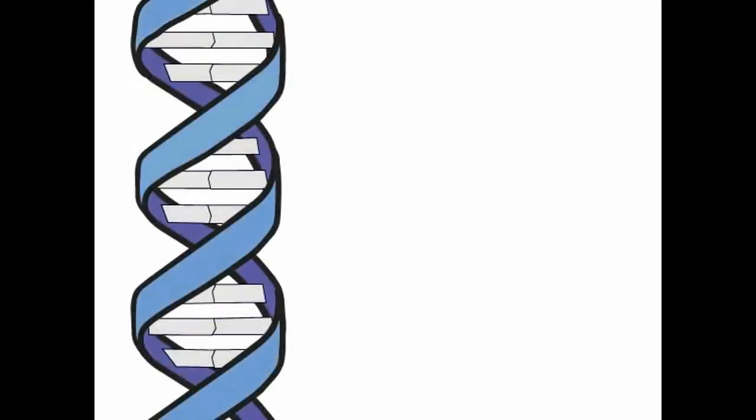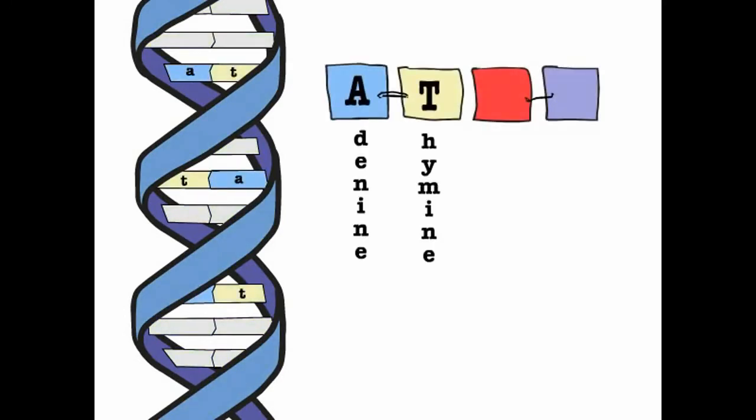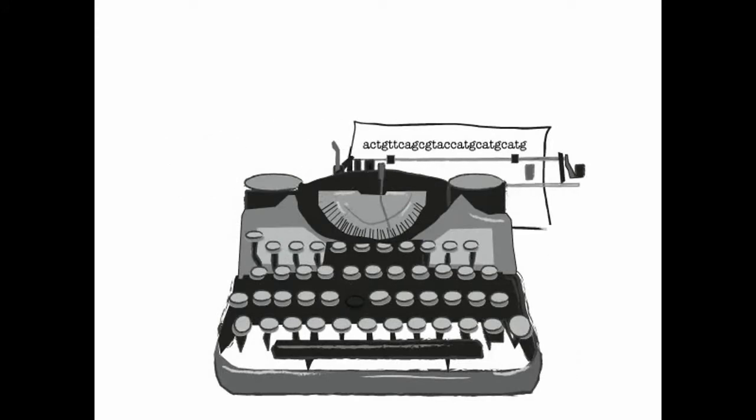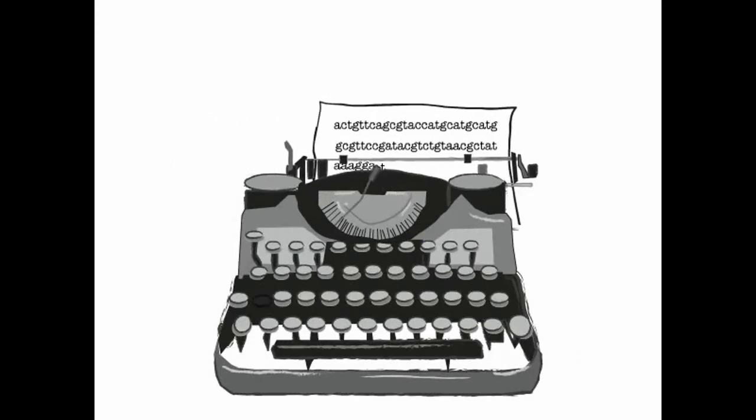DNA is a double-stranded molecule, composed of sugar, phosphate, and four different bases. Adenine, thymine, cytosine, and guanine. These bases spell out the language known as the genetic code.